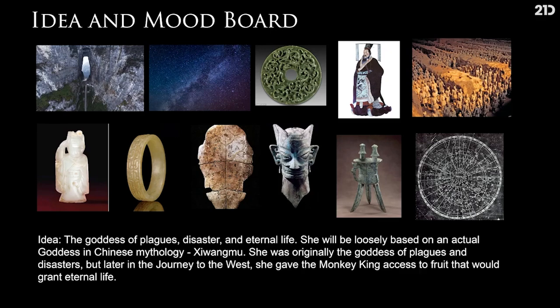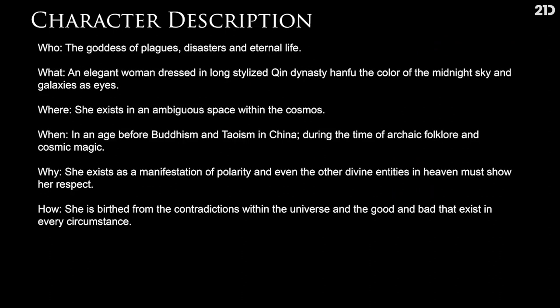From that, I've compiled my ideas and I'm going to take inspiration from an actual goddess in Chinese mythology — Xi Wang Mu. Although I'm not going to design her directly, I'm going to design a goddess heavily based on her. Xi Wang Mu was actually the original goddess of plagues and disasters, but later in Journey to the West she gave the monkey king, Sun Wukong, the fruit that would grant eternal life. So I'm going to create the goddess of plagues, disasters, and eternal life.